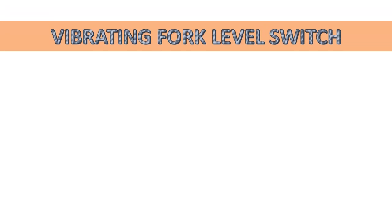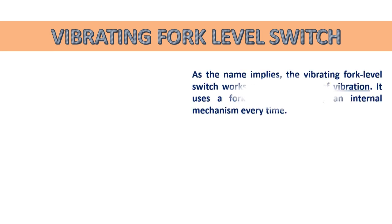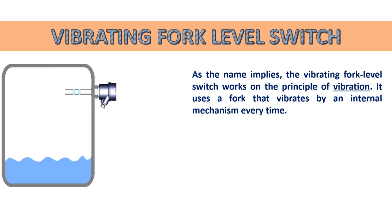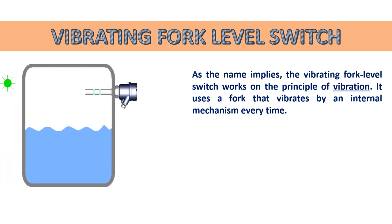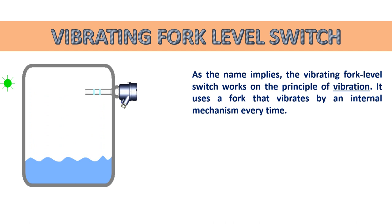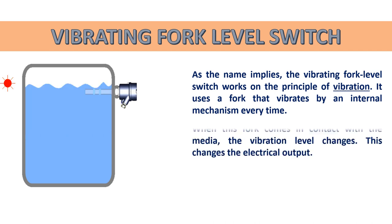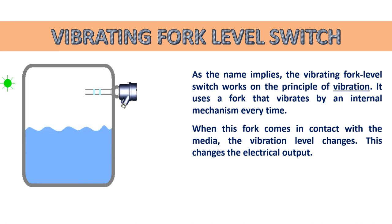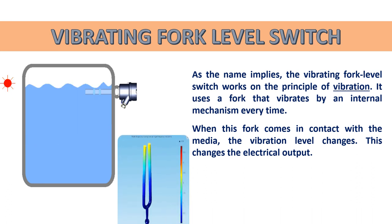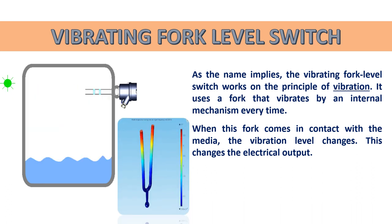Next is the vibrating fork level switch. As the name implies, it works on the principle of vibration. It uses a fork that vibrates continuously by an internal mechanism. When this fork comes in contact with the media, the vibration level changes, and this changes the electrical output accordingly.